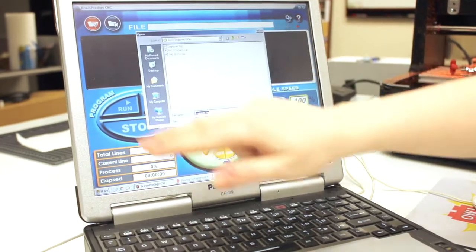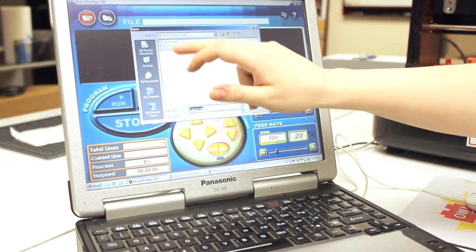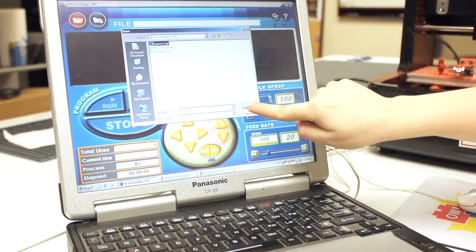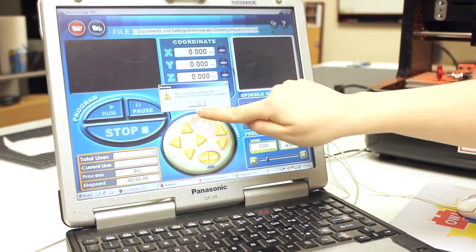I'll show you importing a file here. I've just opened my file software and it's a .tap file, which means G-code. When I import it, it comes in over there. And all I have to do now is click run, and it will start to tell the machine where to go.